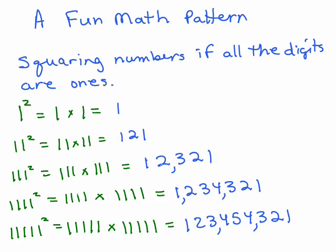If there's five ones, you would count up to five and then back down to one. That works all the way up to nine ones in a row. No calculator needed.